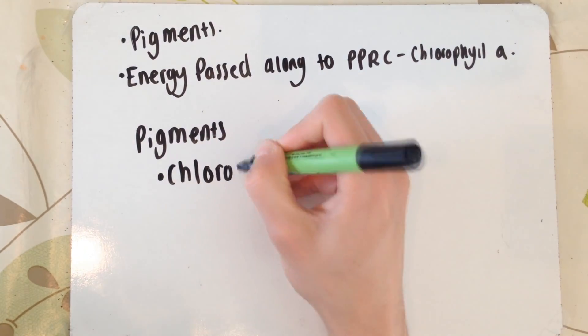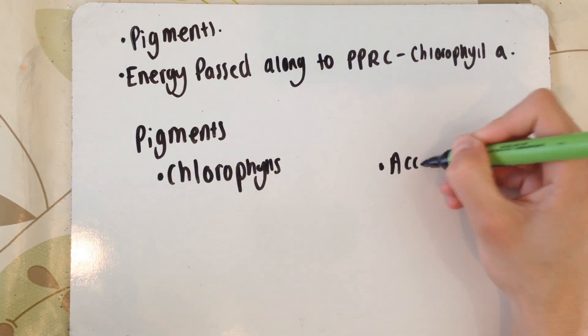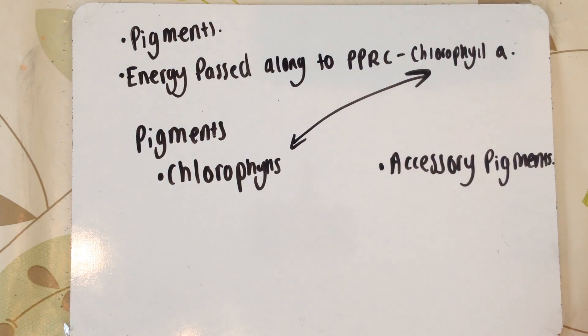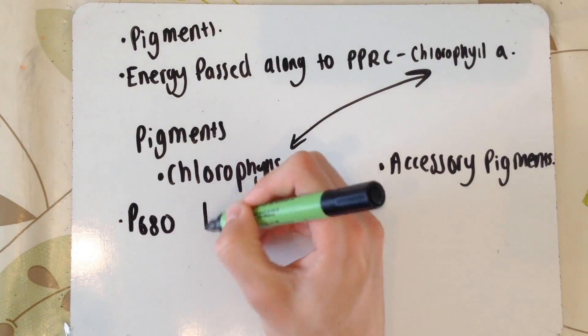But the two primary chlorophylls, chlorophyll A, the primary pigment reaction centers we need to know about are P680 and P700. This number just represents the wavelength of light they absorb.